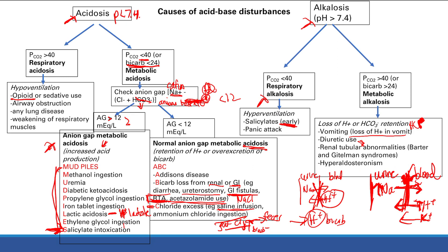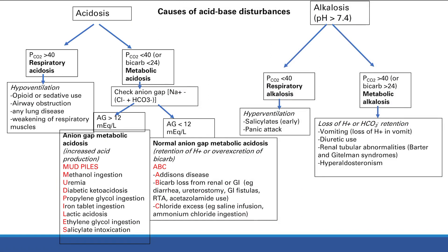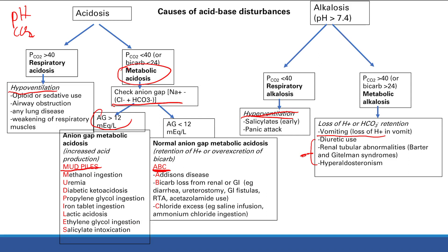This is a super high-yield topic. Make sure you can identify the disturbance based on the pH and the CO2, and understand the possible causes. Respiratory acidosis and alkalosis are easy — hypoventilation and hyperventilation respectively. For metabolic acidosis, memorize the mnemonics — MUDPILES for anion gap, ABC for non-anion gap — and always check the anion gap. Metabolic alkalosis is pretty simple: vomiting, diuretics, renal tubular abnormalities, or hyperaldosteronism — all cause increased H+ excretion and metabolic alkalosis.